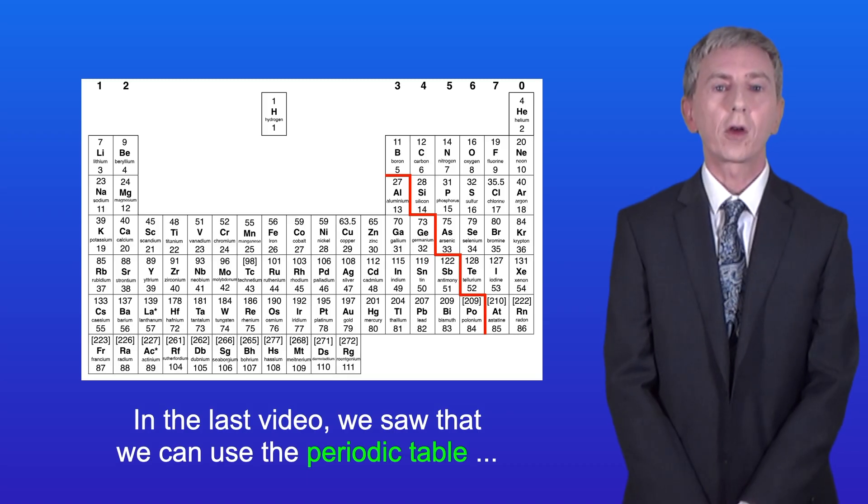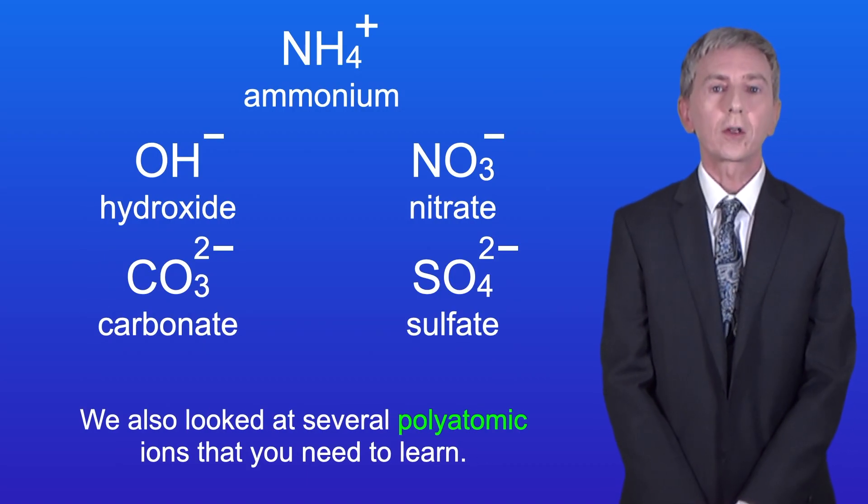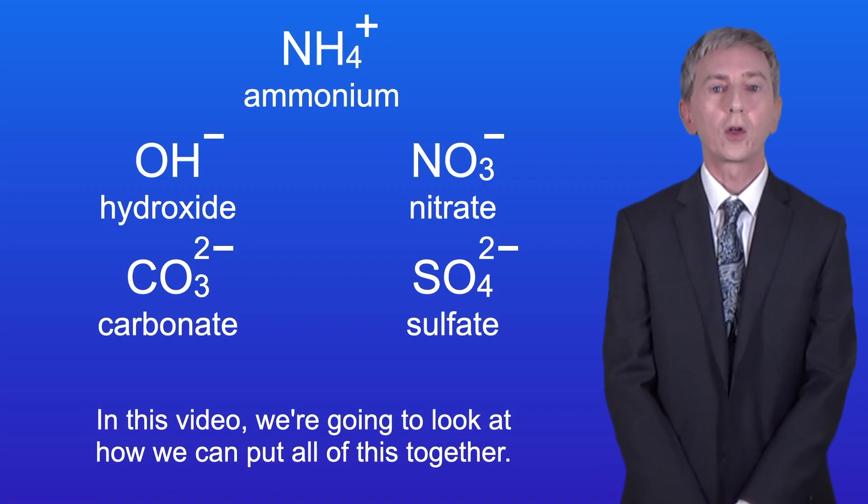In the last video we saw that we can use the periodic table to work out the ions formed by a number of elements. We also looked at several polyatomic ions that you need to learn. So in this video we're going to look at how we can put all of this together.